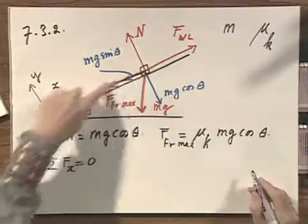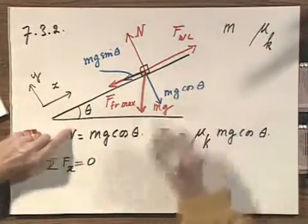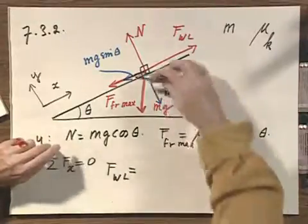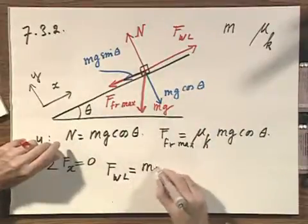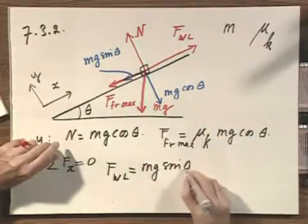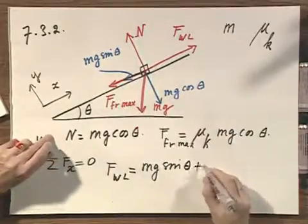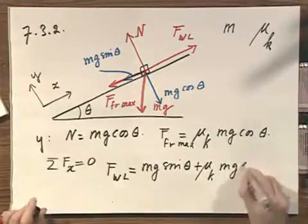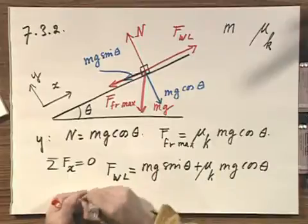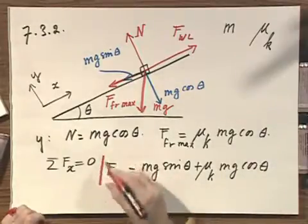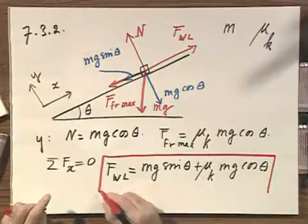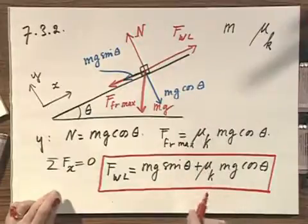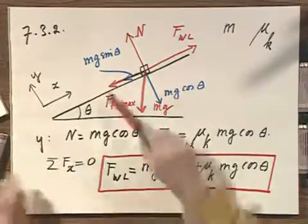And so there has to be equilibrium now in forces along the x direction, so the force of Walter Lewin must be. There are two in this direction. There is mg sine theta downhill, so to speak. And there is downhill the frictional force, which is mu k times mg times cosine theta. And so here you see the required force uphill. The magnitude of this plus the magnitude of this is the force that I have to apply in order to give this object a constant speed.